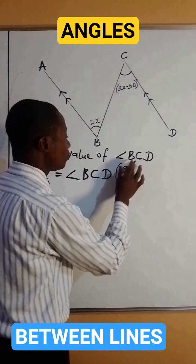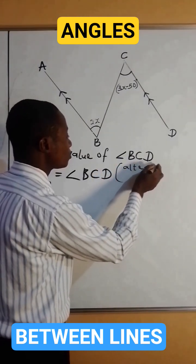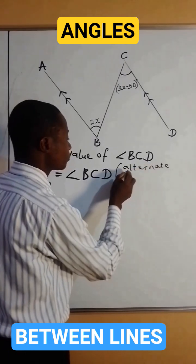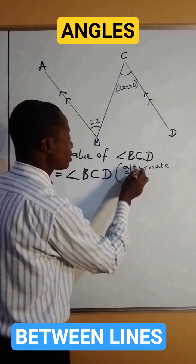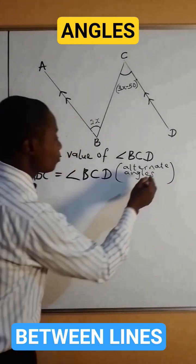We are simply going to write here: alternate angles are equal. The two angles are alternate, therefore they are equal.